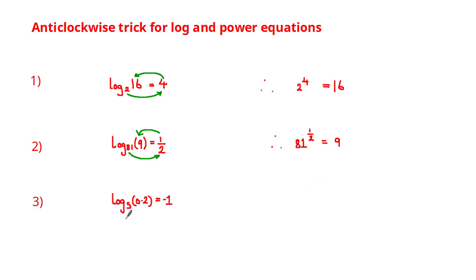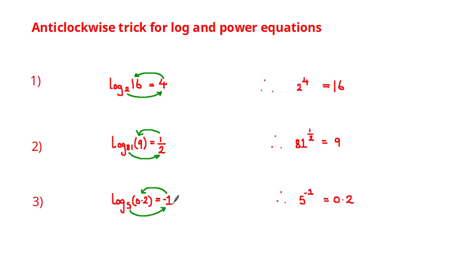For the last example we have log base 5 of 0.2 is equal to negative 1. Starting with 5 and going anti-clockwise we get that 5 raised to the negative 1 is equal to 0.2.